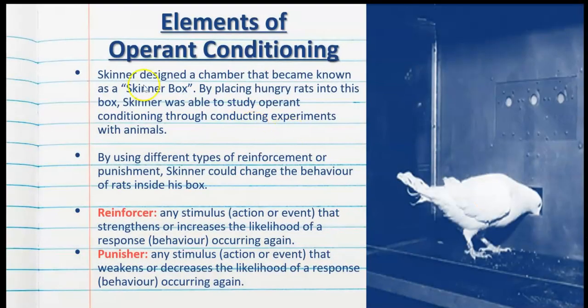Skinner designed a chamber that became known as the Skinner box. By placing hungry rats and pigeons into this box, Skinner was able to study operant conditioning through conducting experiments with these animals. By using different types of reinforcement or punishment, Skinner could change the behavior of the rats or pigeons inside the box. This process is called shaping.